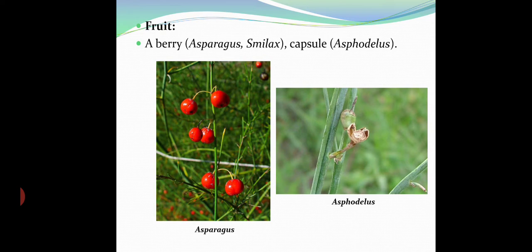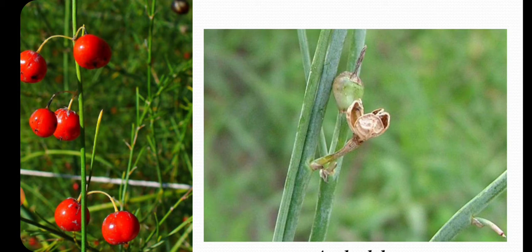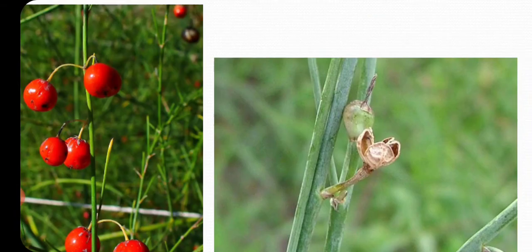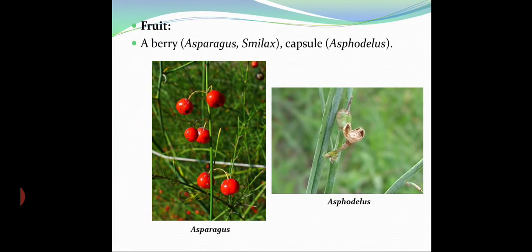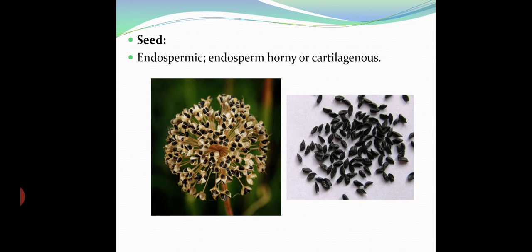Fruit is generally of two types: berry or capsule. Asparagus produces a perfect berry, which is not edible. Asphodilus produces a capsule — green when young and splitting apart when mature and dried. Seeds are endospermic with horny or cartilaginous — thick and tough — endosperm. The seeds shown are actually onion seeds.